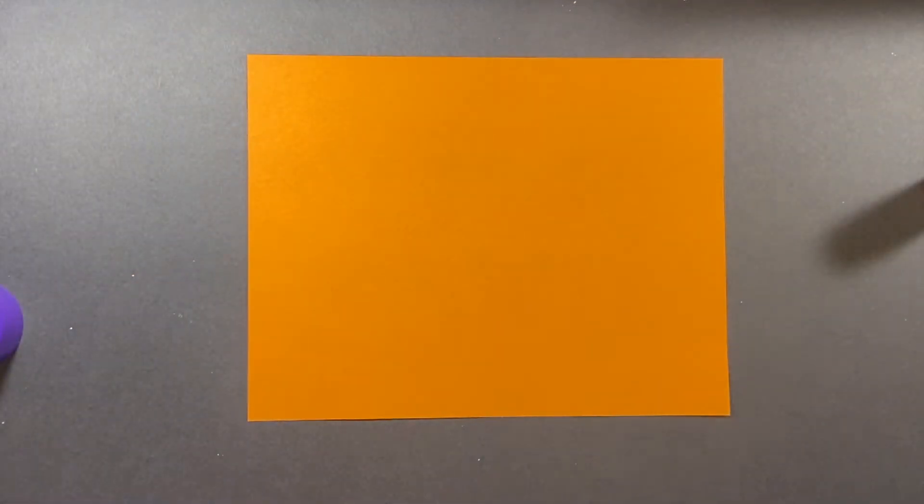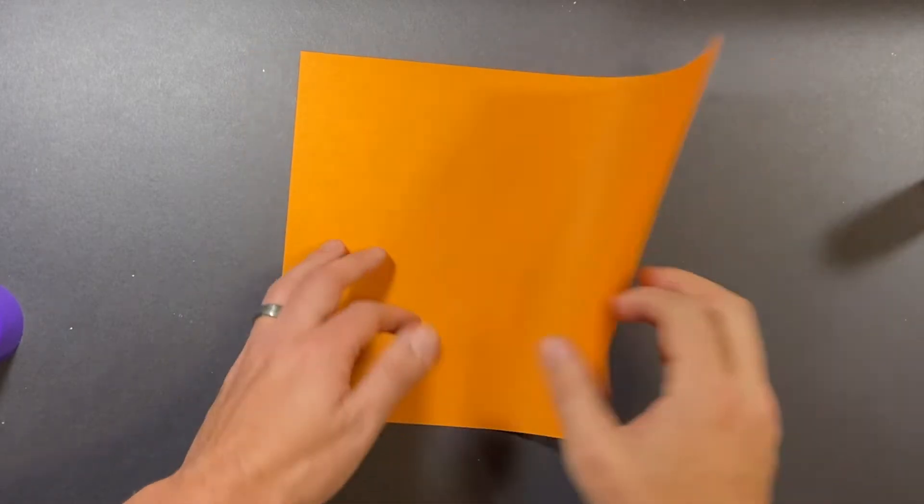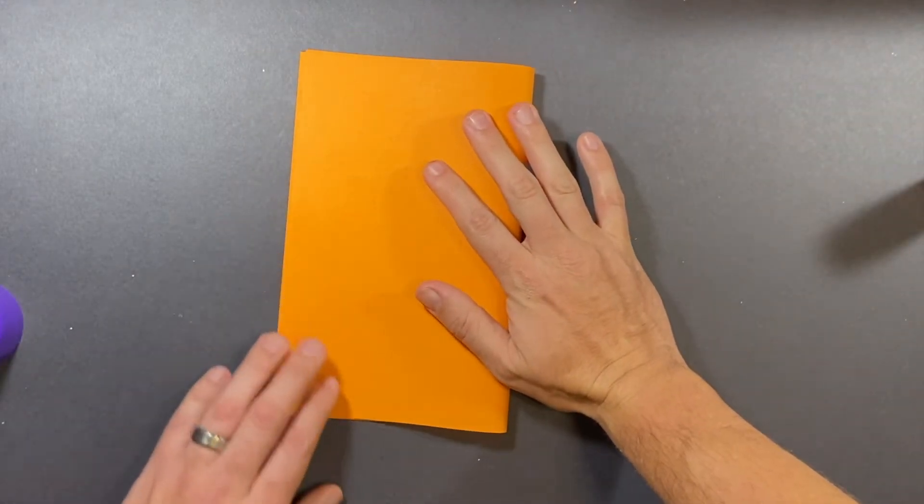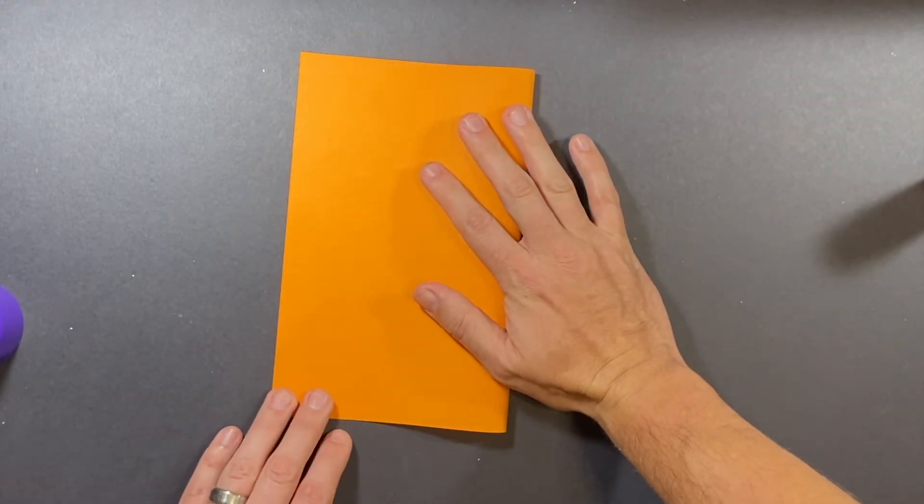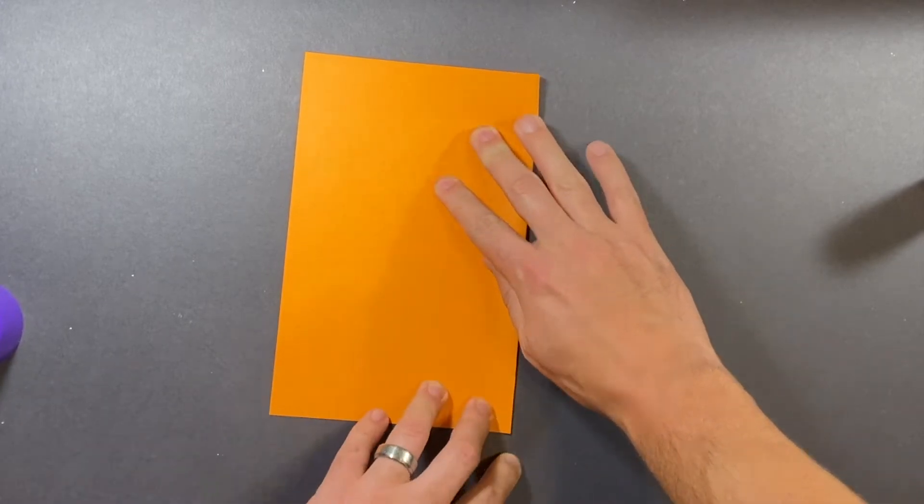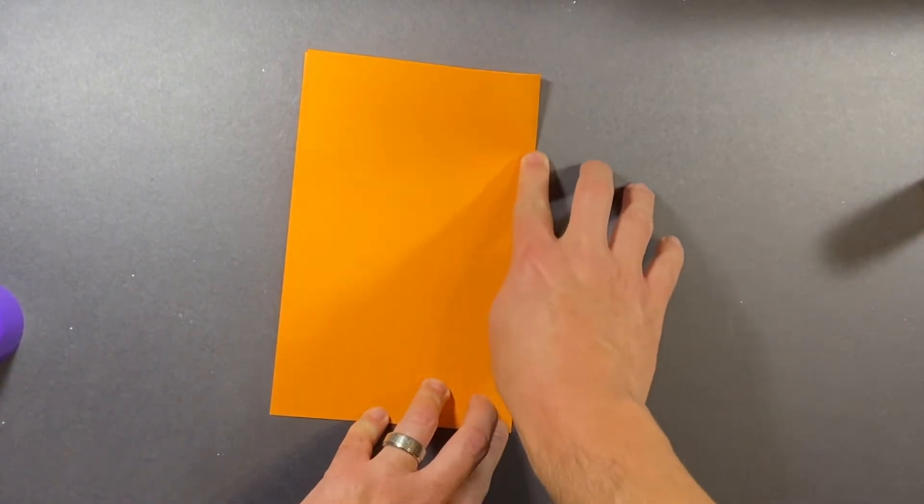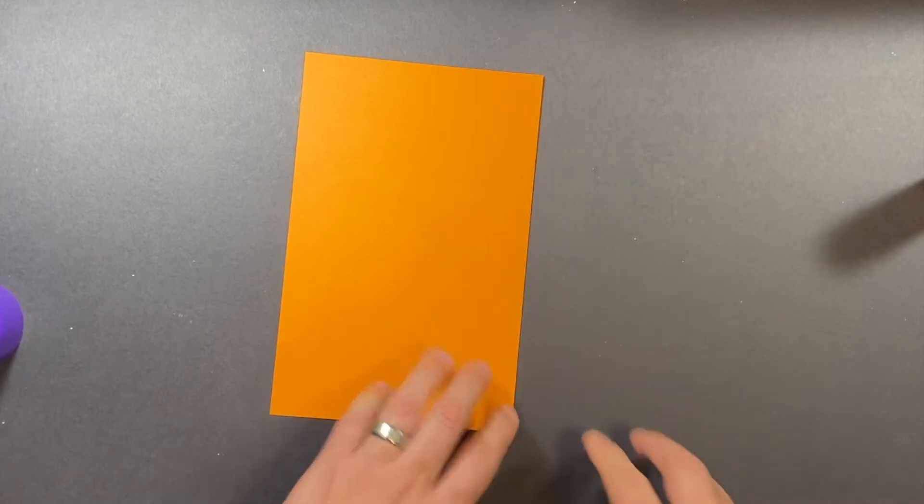Now it's time for an orange sheet of construction paper. Lay it down landscape, fold it in half. We've done this a few times before. No surprises here. Give it a nice, crisp crease right up the side. Great job.